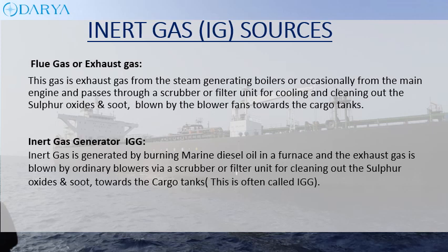Inert gas can also be generated by burning marine diesel oil in a furnace; the exhaust gas is blown by ordinary blowers via a scrubber or filter unit for cleaning out the sulfur oxide and soot to the cargo tanks. This unit making the inert gas is often called IGG.